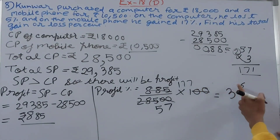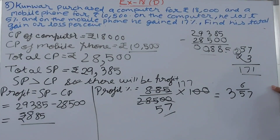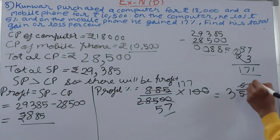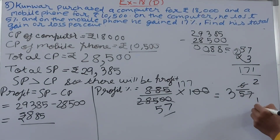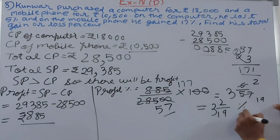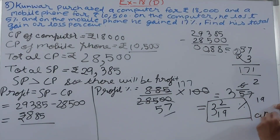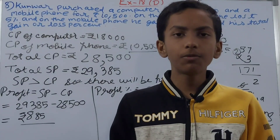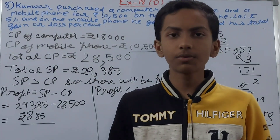Now 177/57: checking if 57 divides into 177 — 57 × 3 = 171, so the whole number part is 3. The remainder is 177 − 171 = 6, giving 6/57. Simplifying by dividing by 3: 6/57 = 2/19. Since 19 is a prime number, this cannot be simplified further. So our final answer is 3 and 2/19 percent profit. Friends, that's all for today — if you're new to my channel, don't forget to subscribe and leave a like. Take good care of yourself, bye bye!